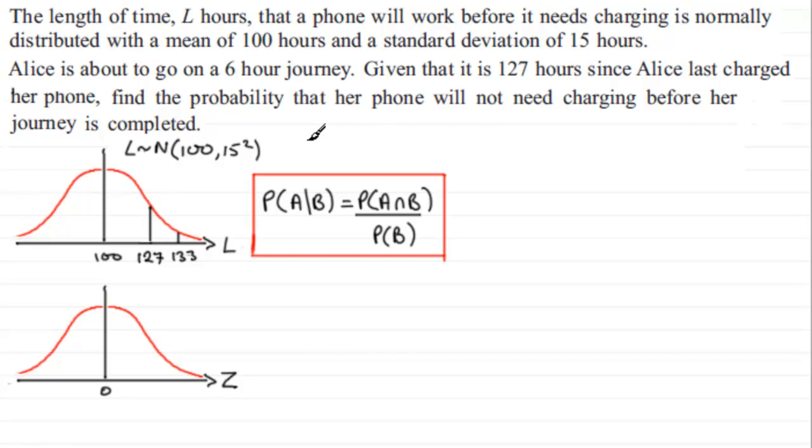So how does that fit into this? Well, essentially you've got the probability that the phone will not need charging. That would mean we've got the probability that it will last for more than 133 hours, given that we know that it lasts at least working up to 127. So L is greater than 127.